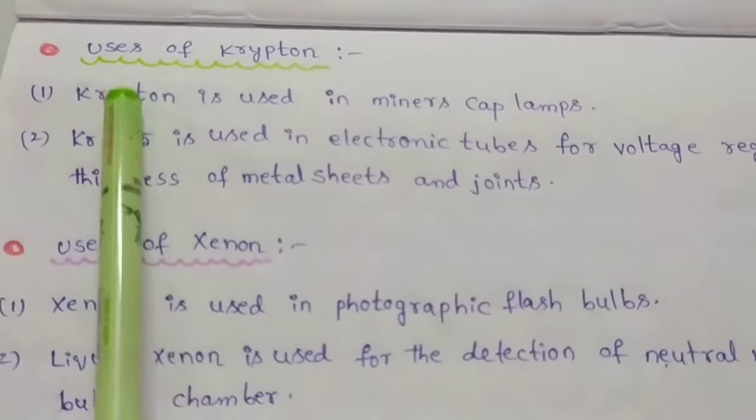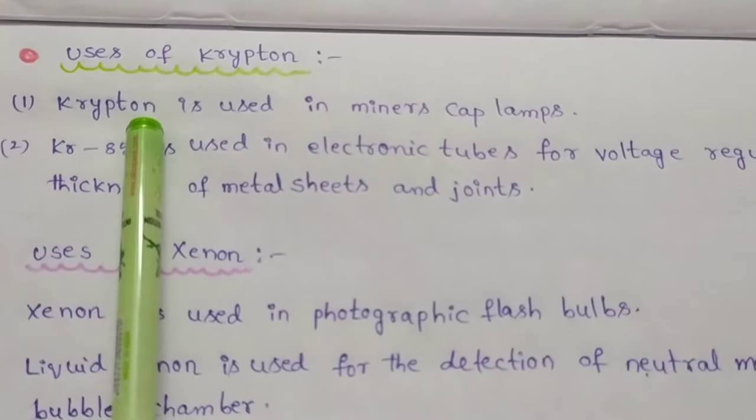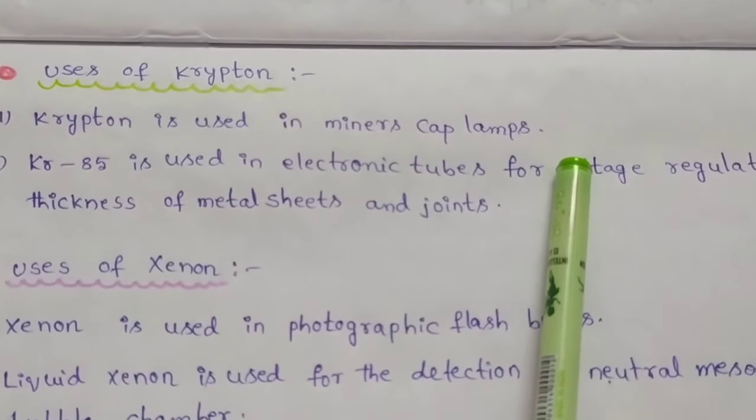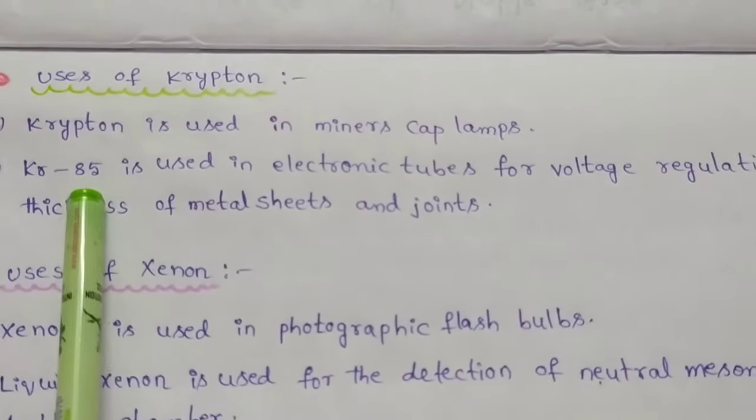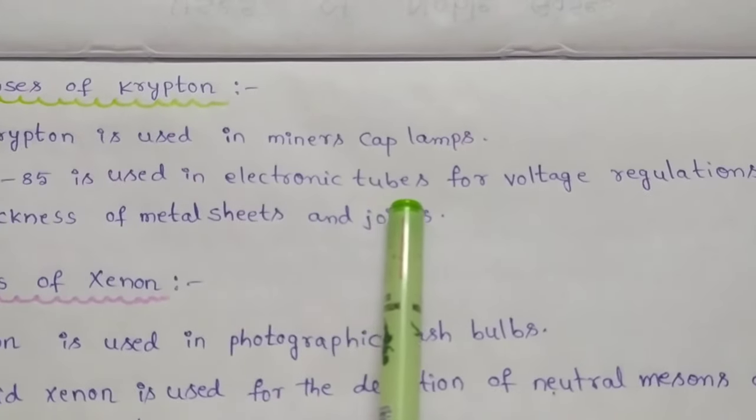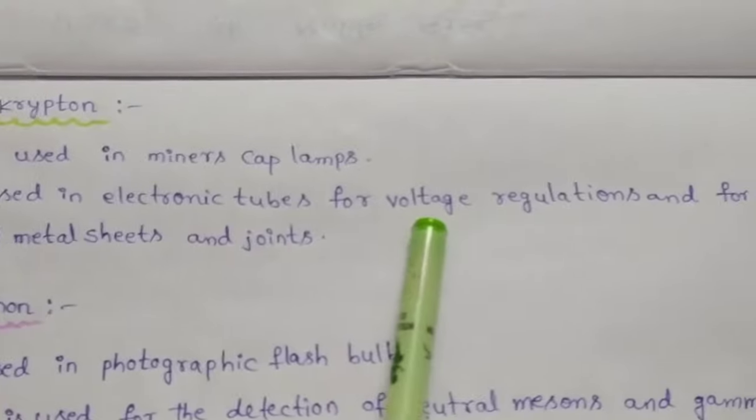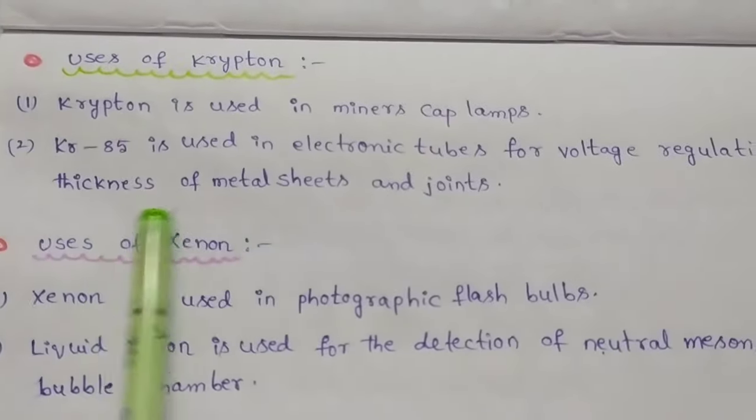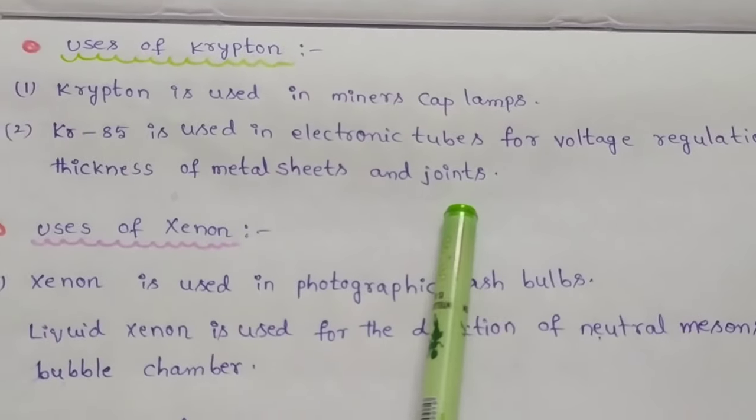Now we discuss the uses of krypton. Krypton is used in minor cap lamps, that means bed lamps. Krypton-85 is used in electronic tubes for voltage regulations and for the measurement of thickness of metal sheets and joints.